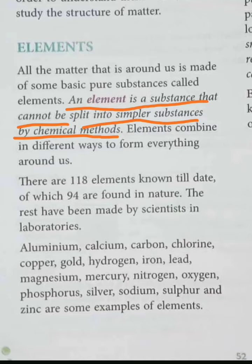Elements combine in different ways and in different proportions to form everything around us. There are 118 elements known till date, out of which 94 are found in nature, and the rest have been made by scientists in laboratories.